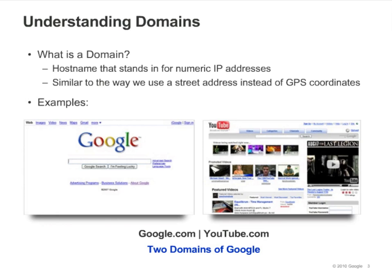So far in this course, we've focused on tracking within a single domain. Before we learn how to track across multiple domains, let's understand why we might want to do this. A domain is a host name that represents a numeric IP address on the internet. It allows us to easily identify a website by a name instead of having to use a long string of numbers. For example, google.com and youtube.com are both domains owned by Google.